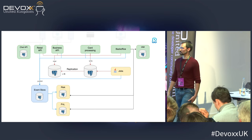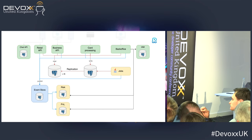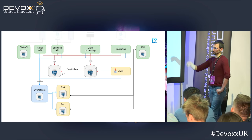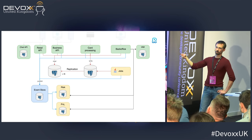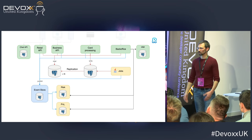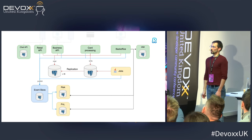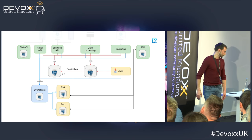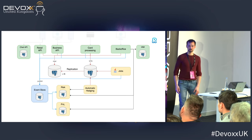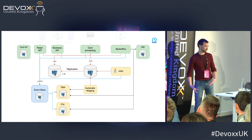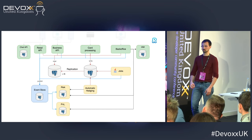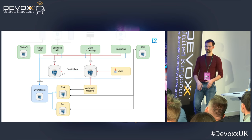The event-driven model allowed us to have the risk calculation start happening in a separate application, which on every event — every financial movement — would update the risk online, with a delay of up to about 100 milliseconds. That allowed us to build the whole hedging of our risk in an automated manner. Our volumes are a lot bigger now, and our finance people don't have to go and trade on the market that accumulated risk.